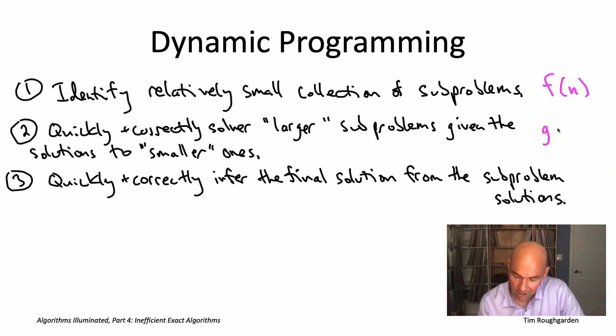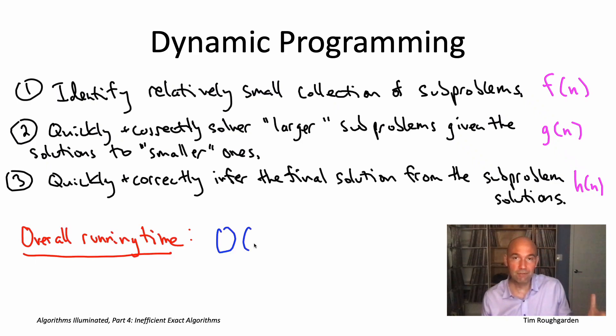Suppose you have a running time bound of g(n) for solving each of your subproblems, given the solutions to the easier subproblems that you already solved. And suppose it takes you h(n) time to extract the final solution from the solutions to all of the subproblems. Well, then we get a sort of obvious running time bound, which is just the number of subproblems f(n) times the time per subproblem g(n), plus the post-processing extraction step, h(n).